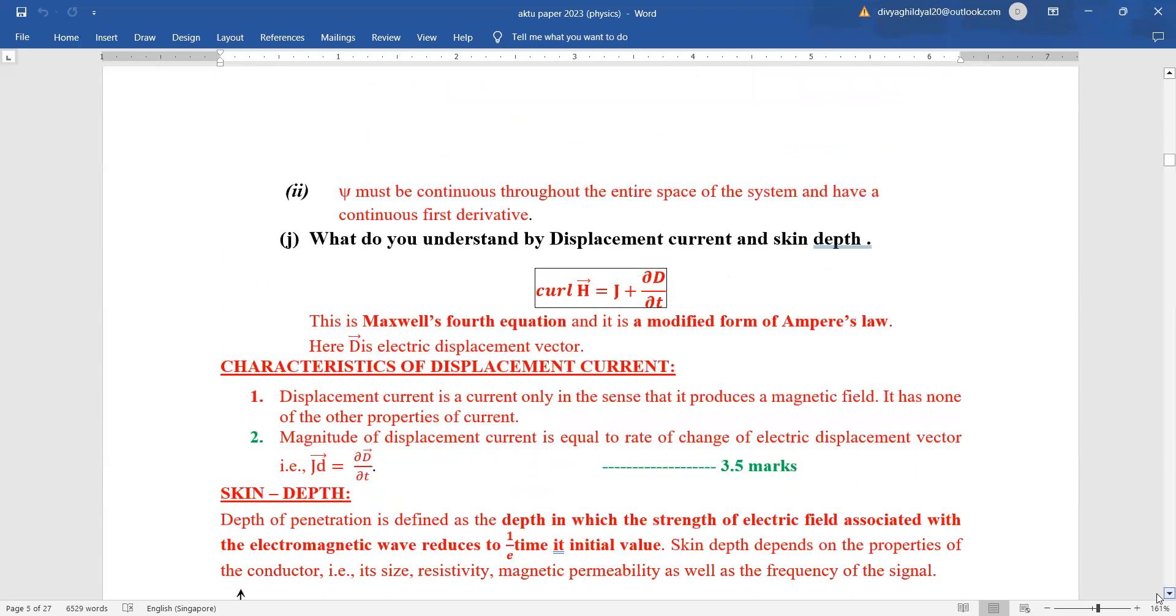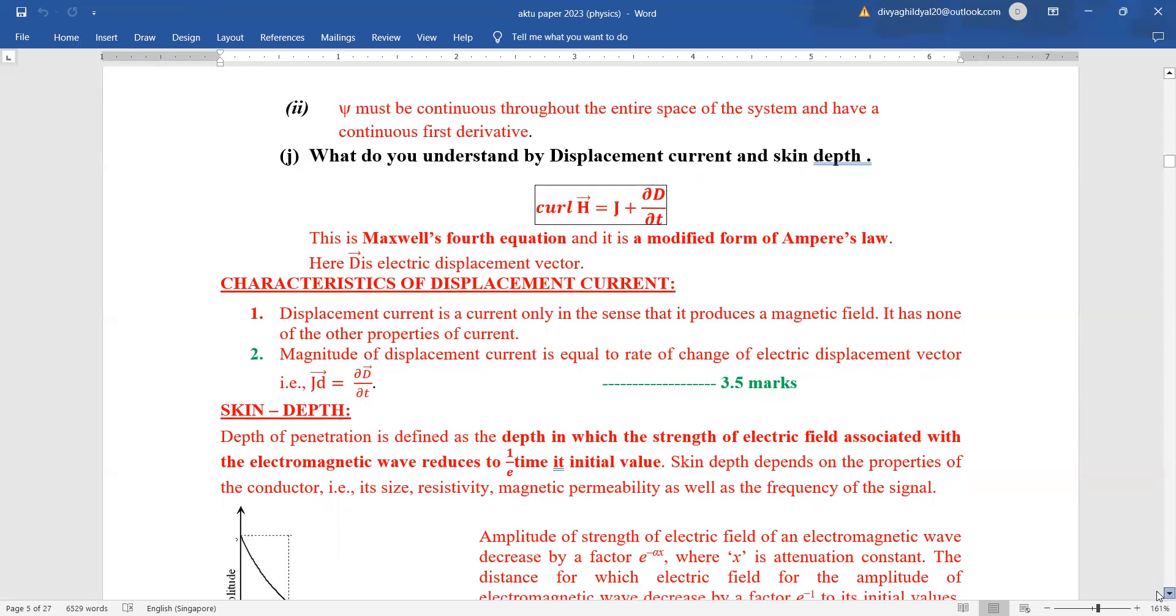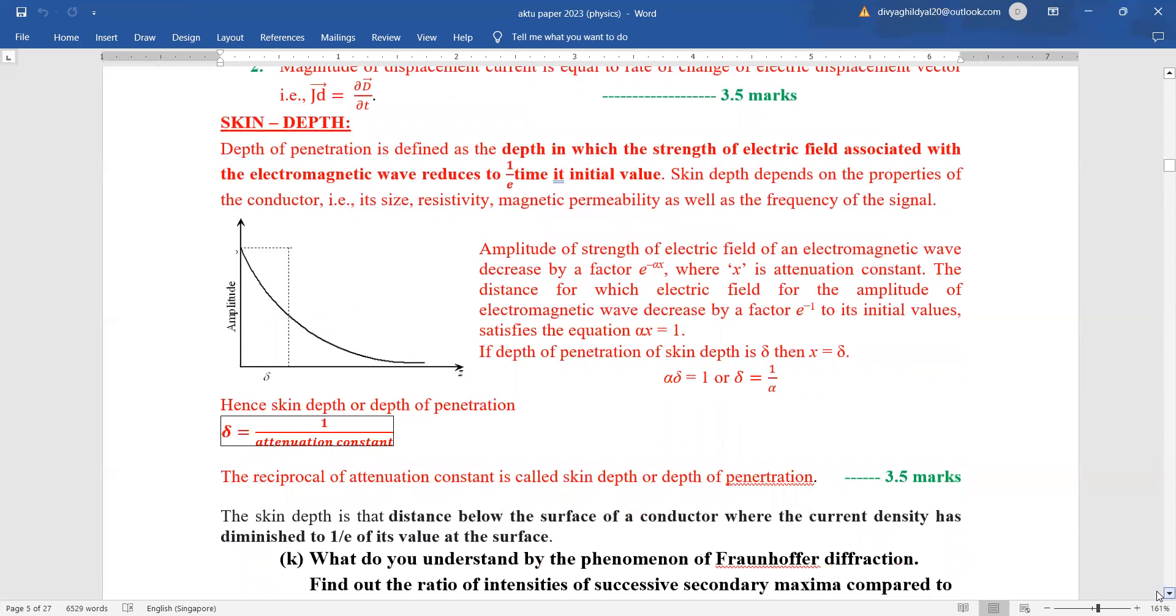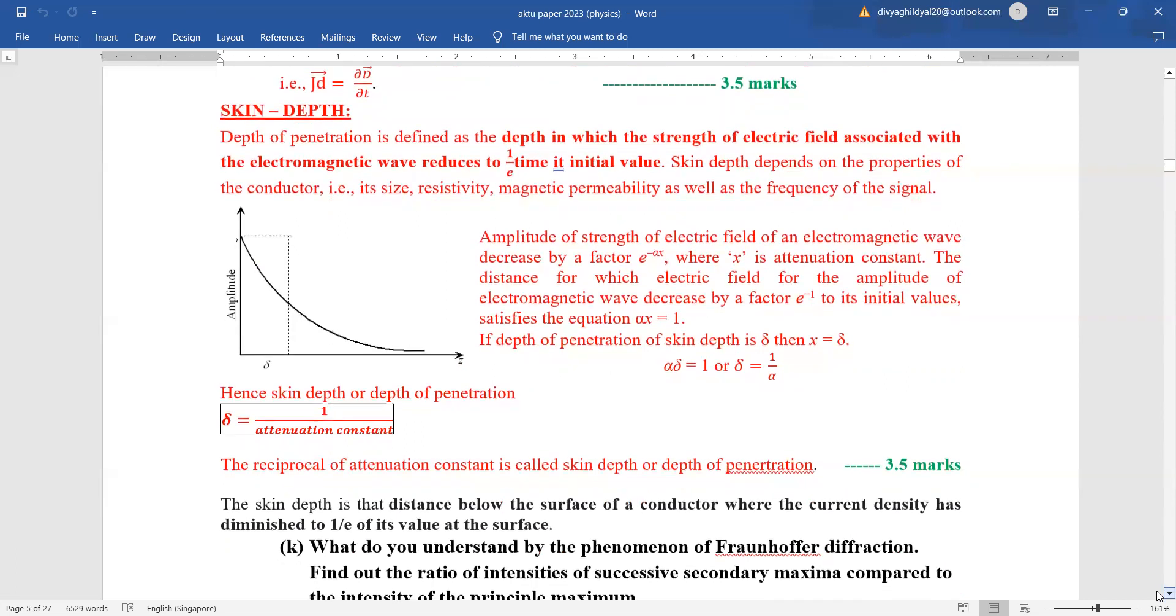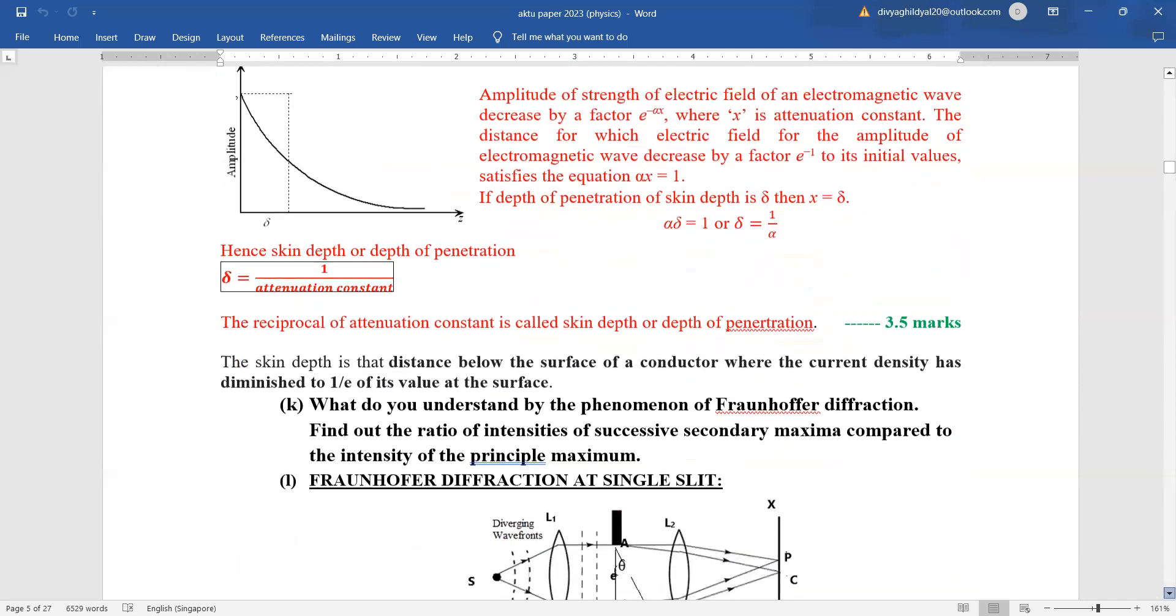Next, what do you understand by displacement current and skin depth? Maxwell's fourth equation introduced the concept of adding the phenomena of displacement. This is the modified form of Maxwell's fourth law where Vd is electric displacement vector. Displacement current is only current in the sense that it is producing a magnetic field. Otherwise, it is not having any of the properties of current. Skin depth: depth in which the strength of electric field associated with electromagnetic wave reduces to one upon e times of its initial value. You can draw this graph because these questions are theoretical. Fetching you three and a half, three and a half makes it seven marks. You should be drawing diagrams, explaining it with the help of equations or the formula.